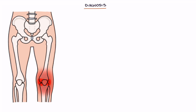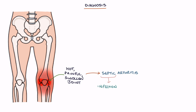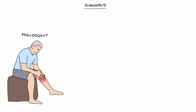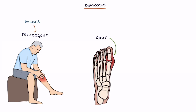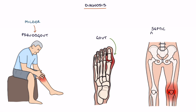In any patient presenting with a hot, painful and swollen joint, septic arthritis or infection in the joint must be excluded as this is a medical emergency. Symptoms of pseudogout tend to be milder than those of gout or septic arthritis.